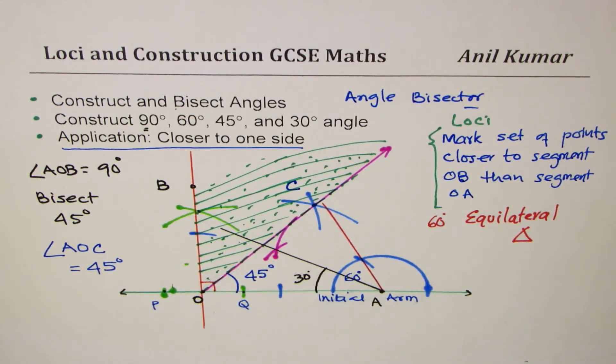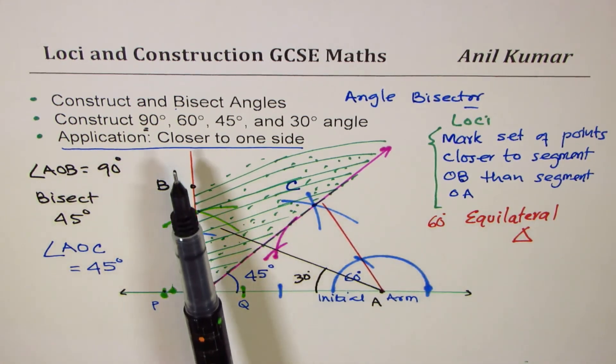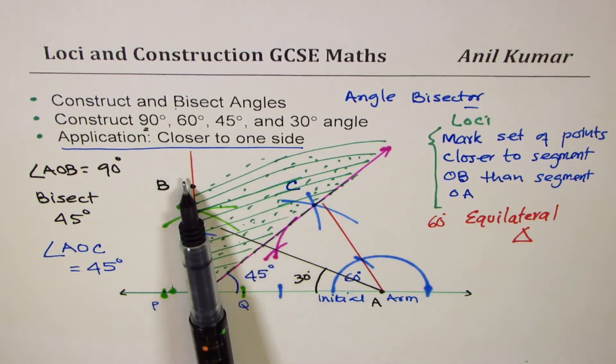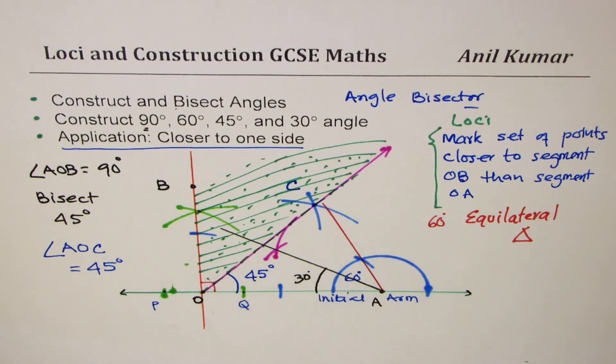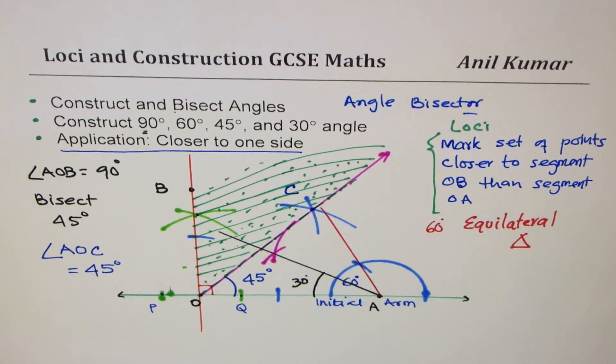I hope the concept is clear. So in this video we have learned how to construct angles, especially 90 degrees, 60 degrees, 45 degrees, and 30 degrees, how to bisect them, and also what do we understand by marking a region which is closer to one side than the other. I hope that helps. Feel free to write your comments, share your views, and if you like and subscribe, that would be great. Thank you and all the best.